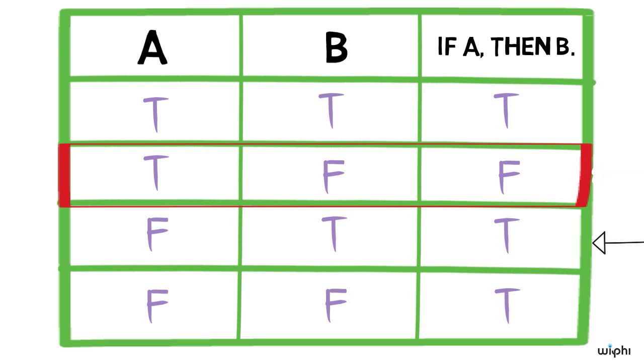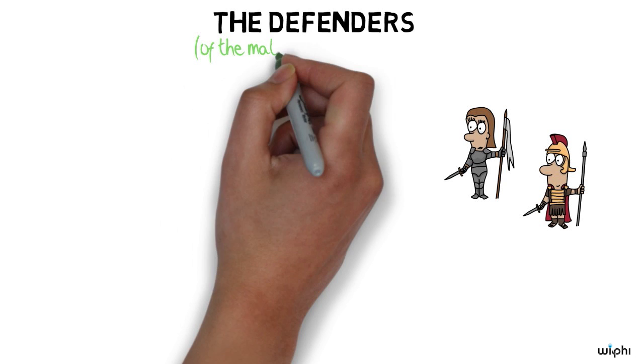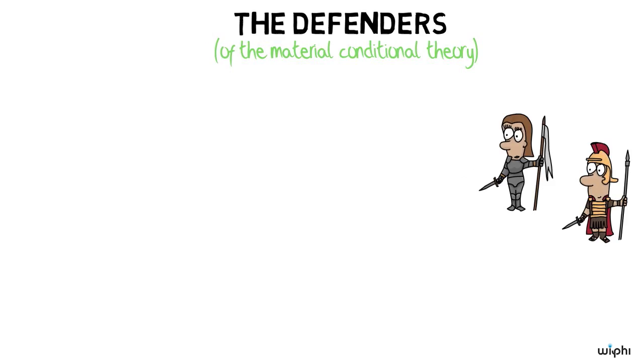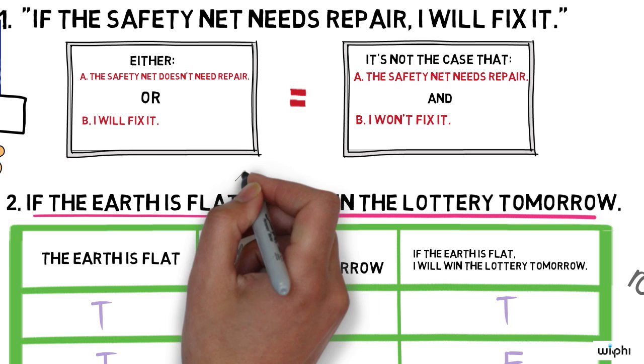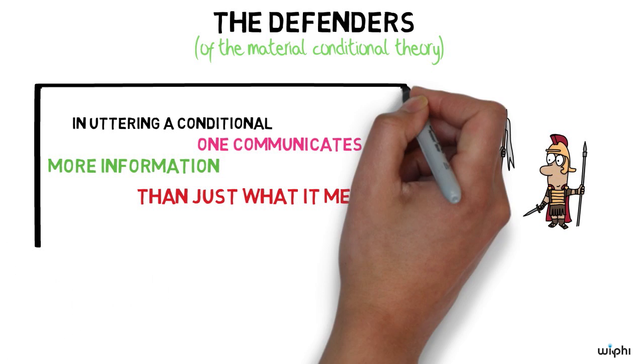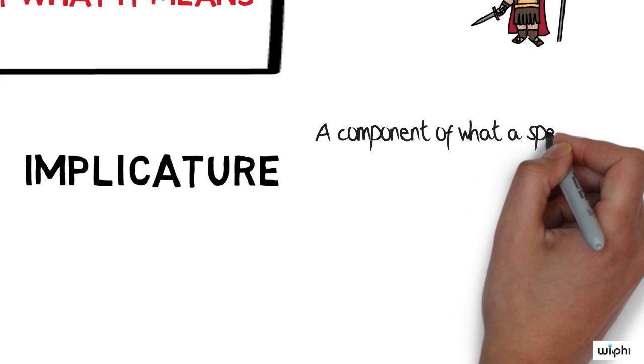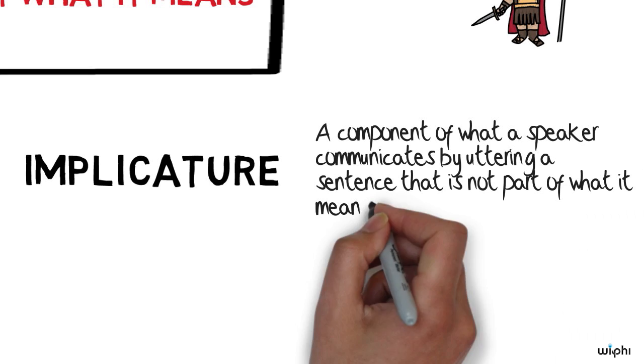Now, defenders of the material conditional theory are definitely aware of these problems, and they have responses to them. Their main line of defense is to hold that in uttering a conditional, one communicates more information than just what it means. And this extra information may underlie the special connection between the antecedent and consequent that seems missing from their theory.